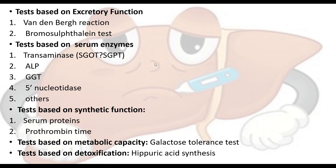The next type of test done to study liver functioning is based on serum enzymes present in the liver. The liver has around four to five different types of enzymes; the most common are SGOT, SGPT, ALP, and GGT. These enzymes have several functions in the liver, and when the liver is damaged, the concentration of these enzymes can increase — most of the time they increase — providing valuable information about liver functioning.